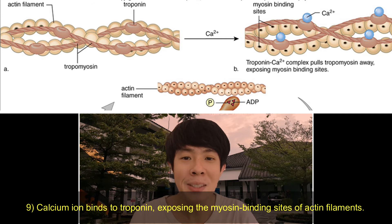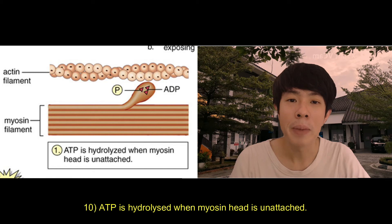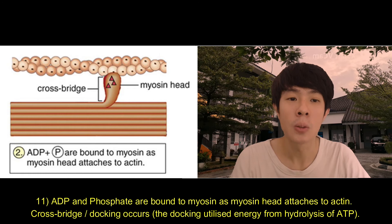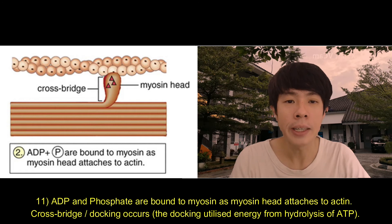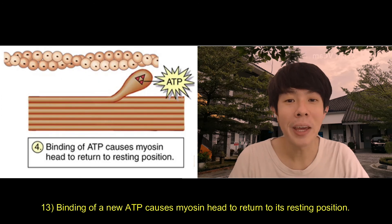Calcium ions bind to troponin, exposing the myosin binding site of actin filaments. ATP is hydrolyzed when the myosin head is unattached. ADP and phosphates are bound to myosin as the myosin head attaches to actin — cross-bridge or docking occurs, utilising energy from ATP hydrolysis. ADP and phosphate release causes the myosin head to change position and actin filaments to move. Binding of new ATP causes the myosin head to return to its resting position.